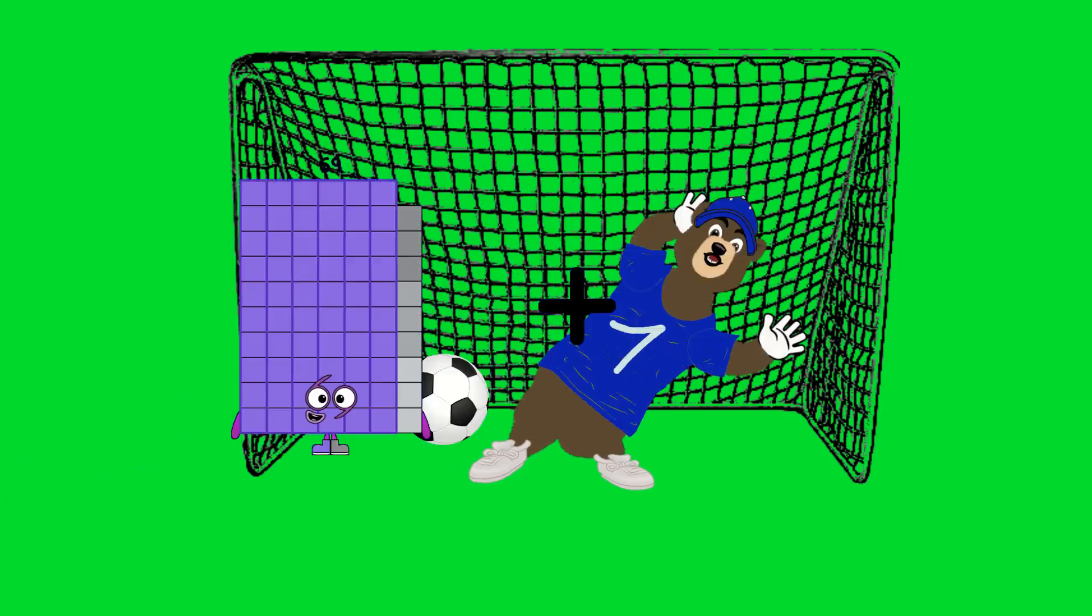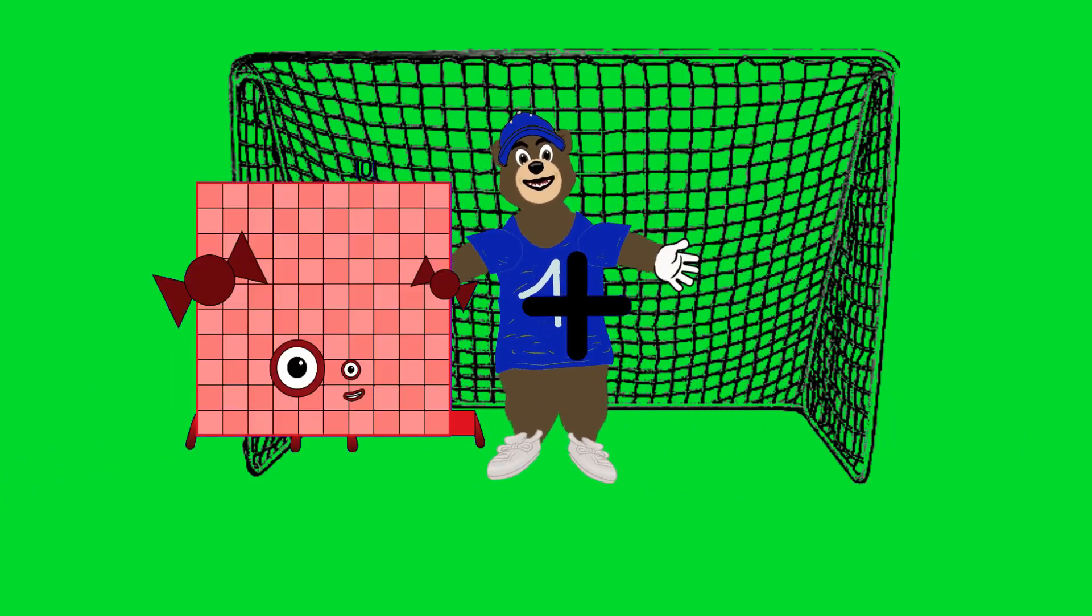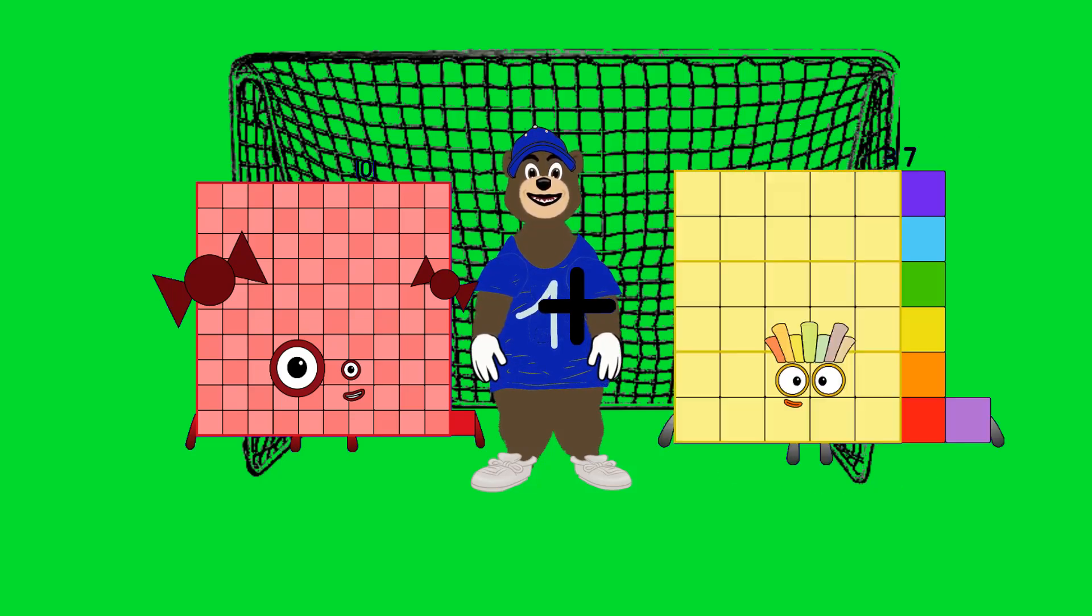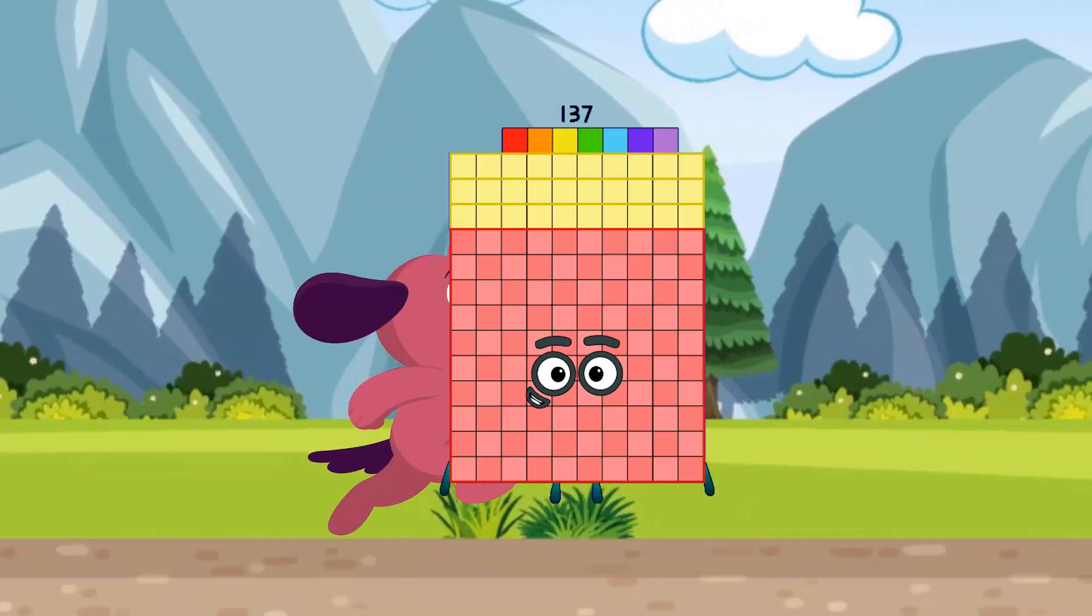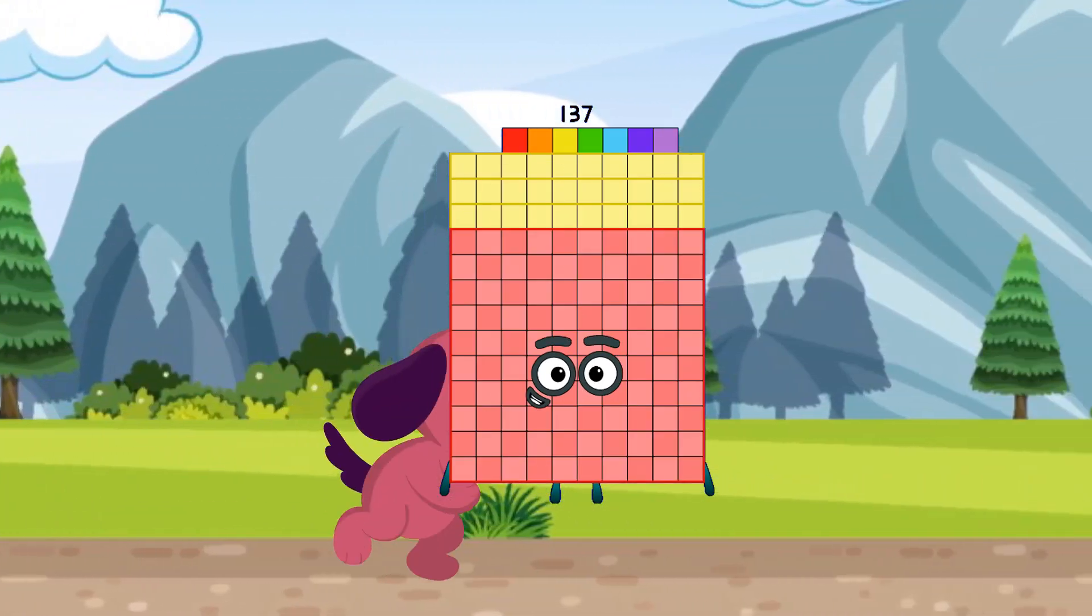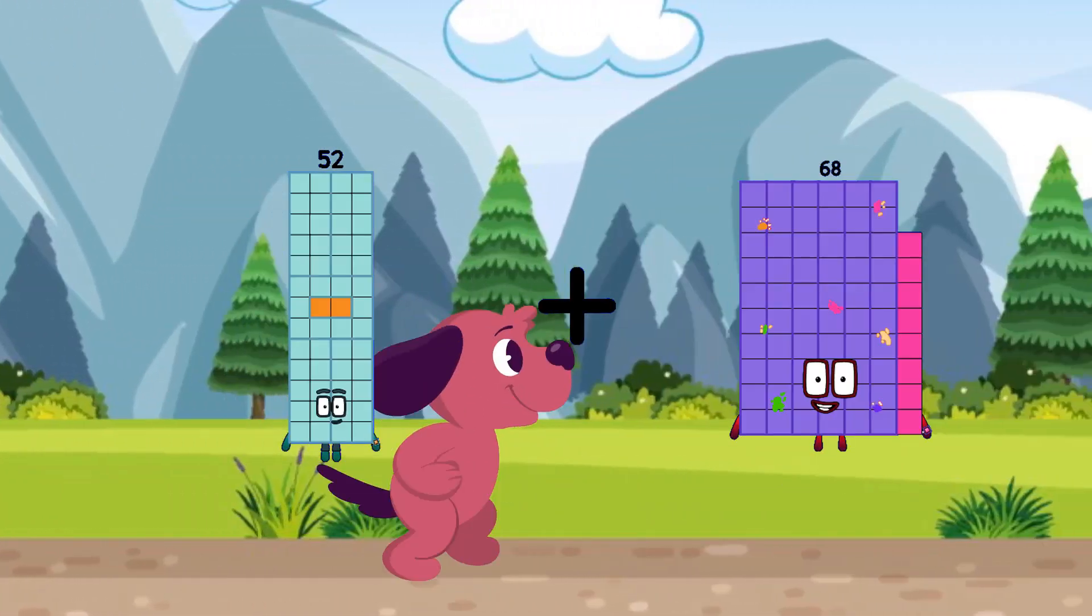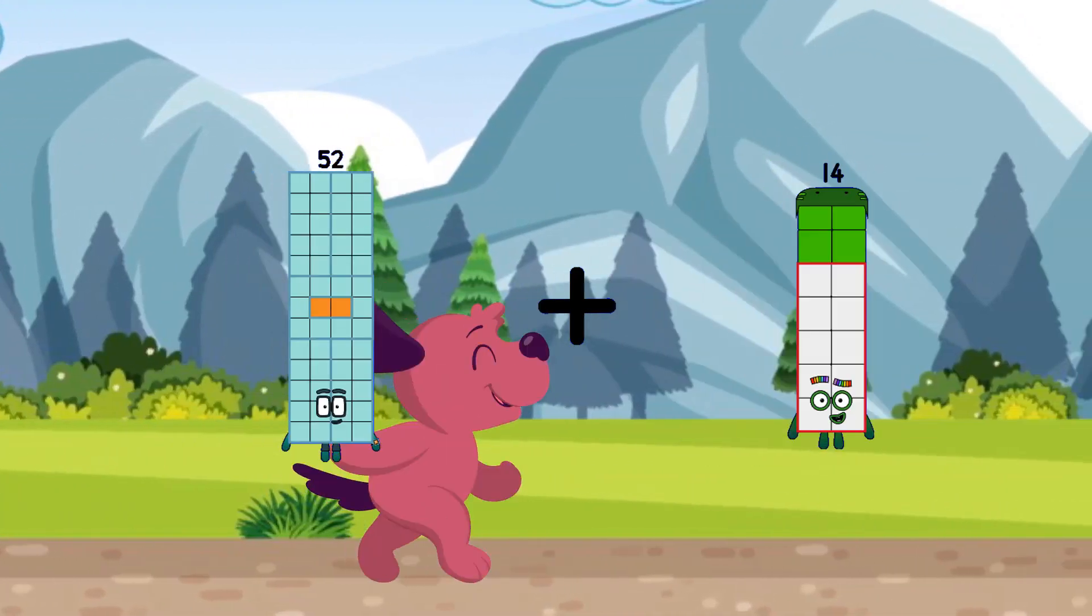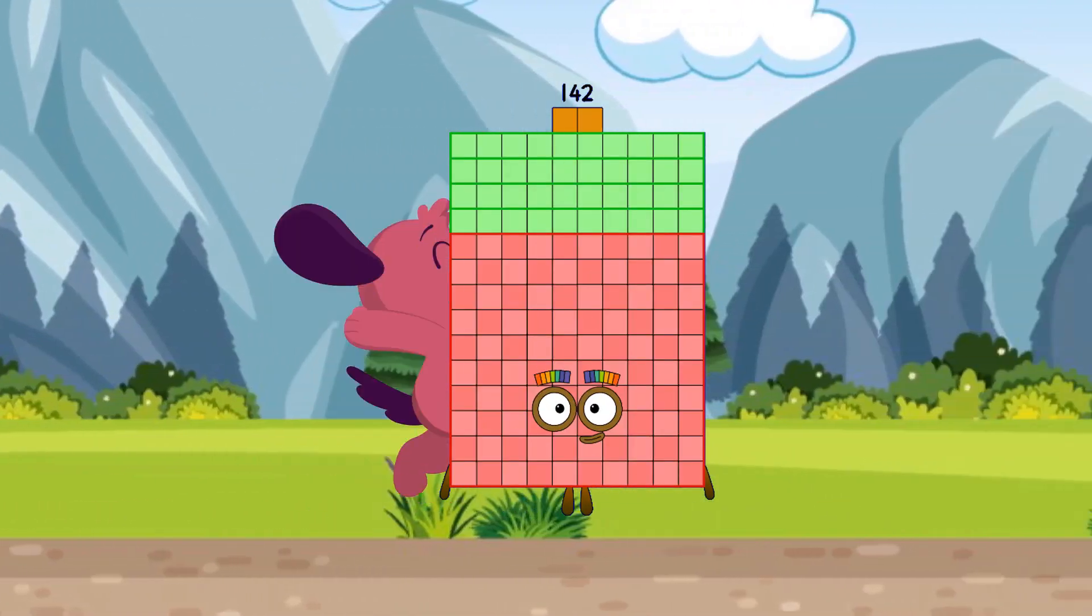101 plus 36 equals 137. 52 plus 90 equals 142.